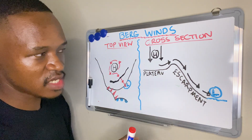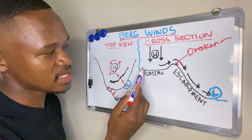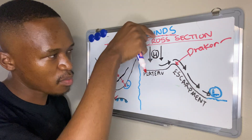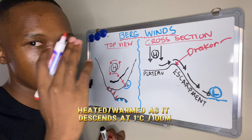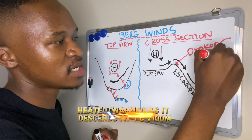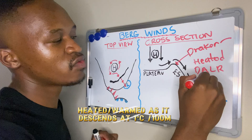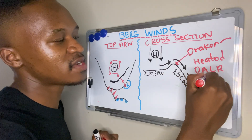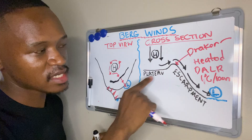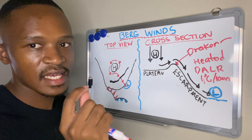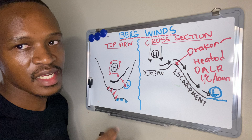As this cold air diverges from the plateau towards the coastal low, it descends the Drakensberg escarpment on the east of South Africa. As it descends, it is heated up at a dry adiabatic lapse rate of one degree Celsius for every 100 meters. By the time it reaches the coast it arrives as hot dry winds.